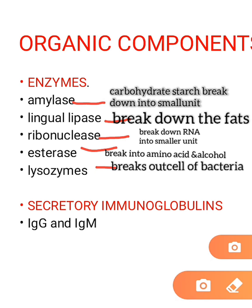The organic components also include secretory immunoglobulins such as IgG. IgG is the main antibody found in the body that helps to control infection — it binds to many pathogens like bacteria, viruses, and fungi to protect from infection.